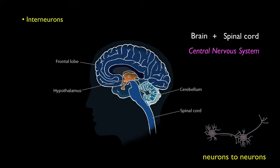Interneurons connect neurons to other neurons. They're found in the central nervous system. The brain itself operates as a network of countless interneurons.